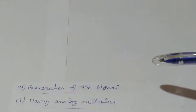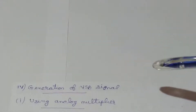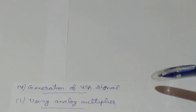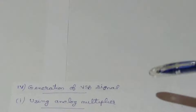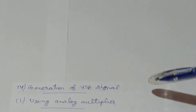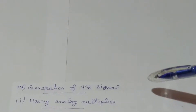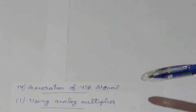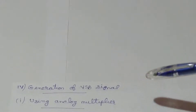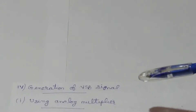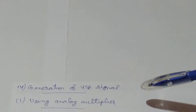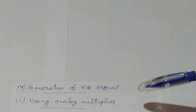Today we are going to discuss about the generation of vestigial sideband signals. There are different methods used for the generation of vestigial sideband signal, and here we are going to consider two of such methods. The first one is by using an analog multiplier and the second one is by using the filter method.